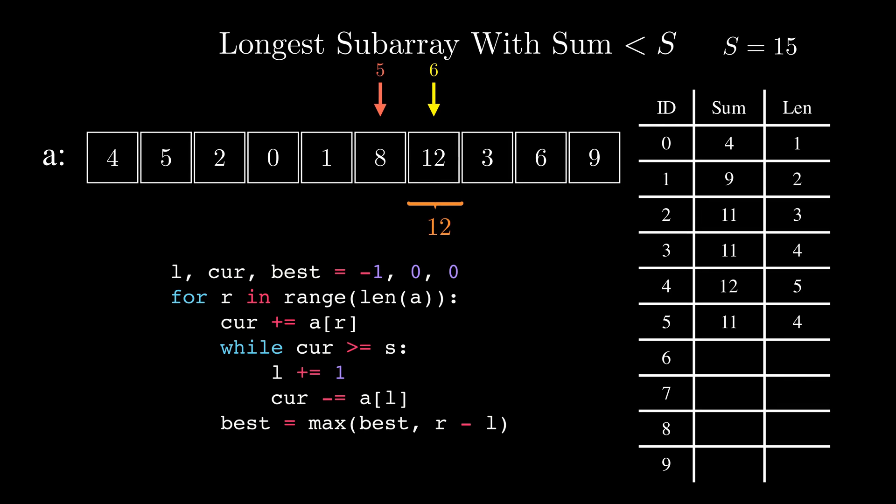During the next step the sum will become 15 so we'll need to adjust it again and the sum will become 3 then we'll move the right pointer and the sum will become 9 then 18. At this point we will need to adjust the left pointer and get the sum to 15 and then to 9.